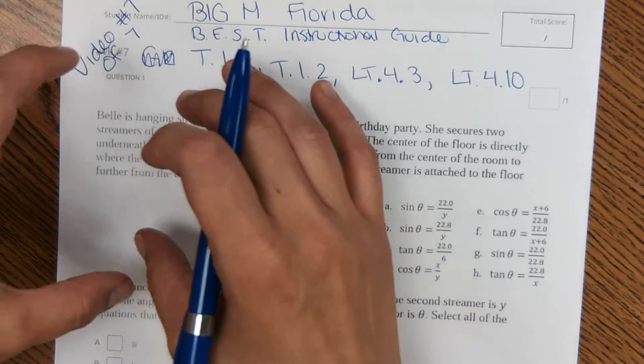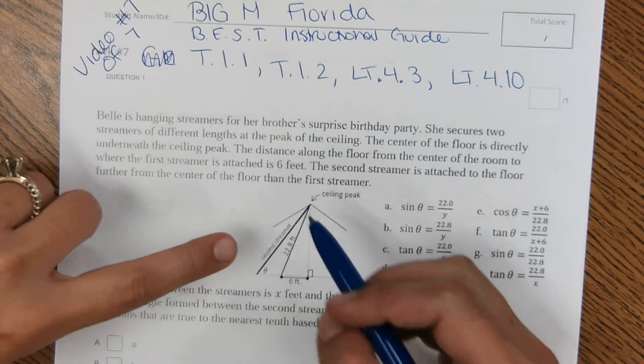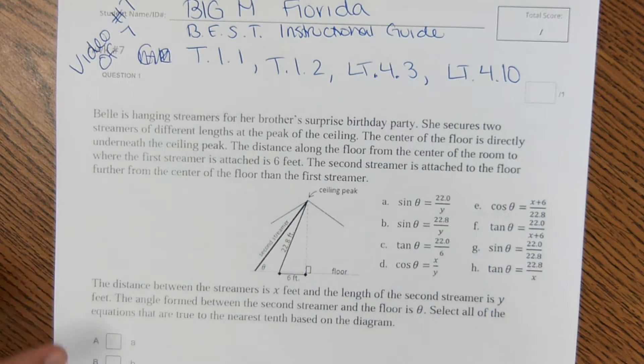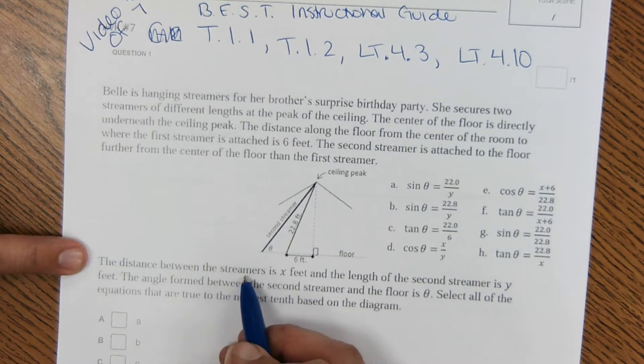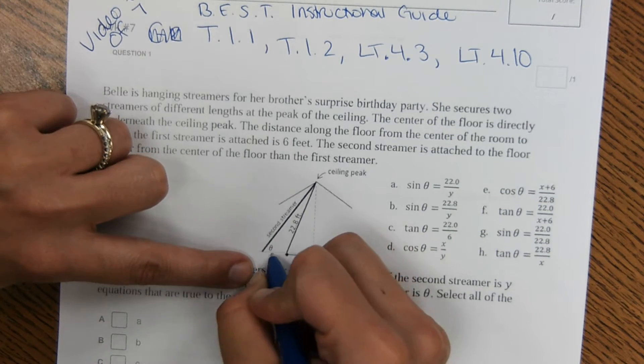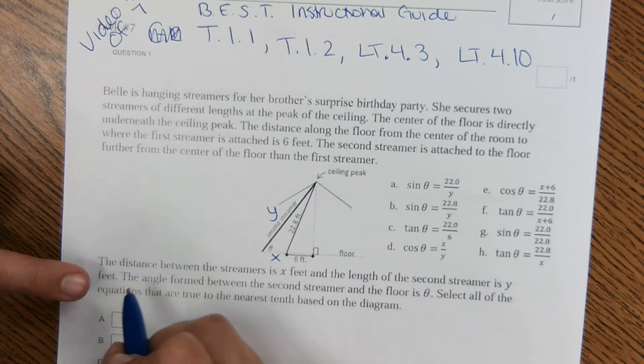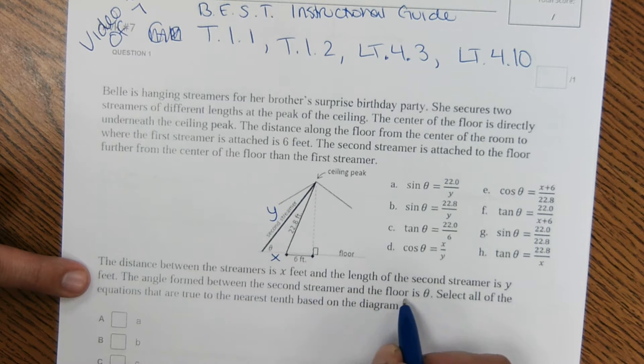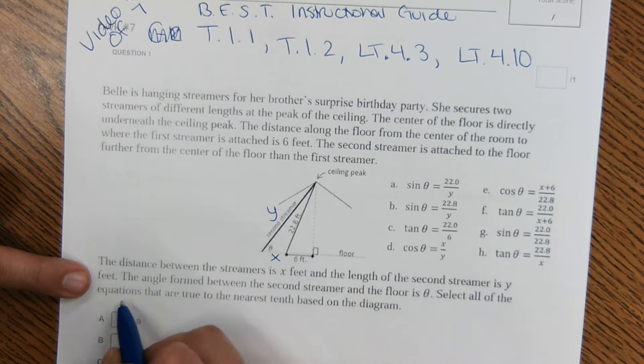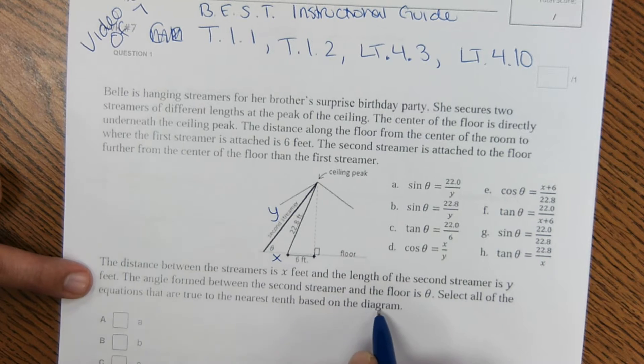The first one gives us a long scenario, but all that is pictured right here, so I'll skip that. The distance between the streamers is x feet, so it shows the streamer here and here is x feet, and the length of the second streamer is y. The angle formed between the second streamer and the floor is theta. Select all the equations that are true to the nearest tenth based on this diagram.